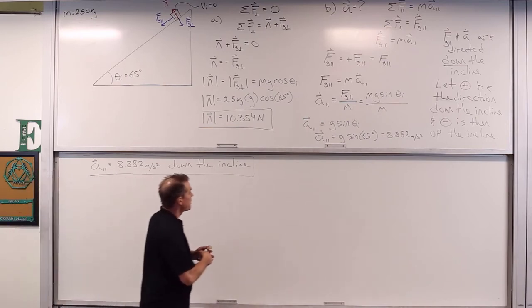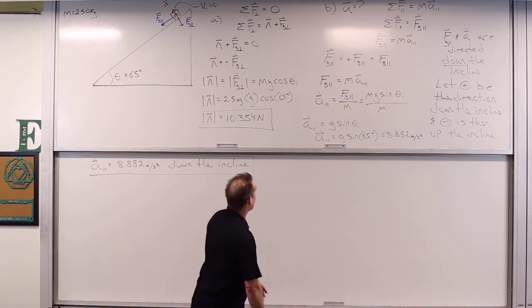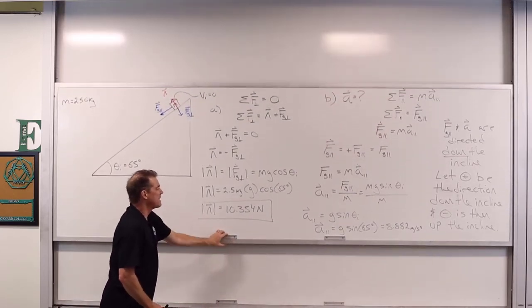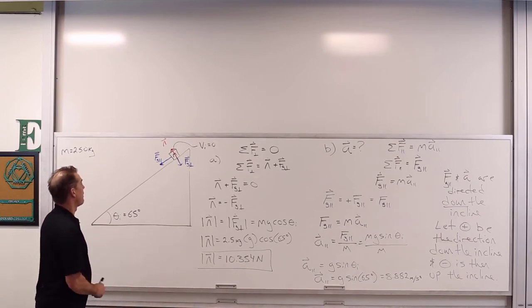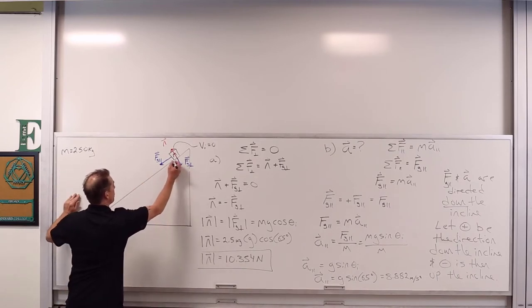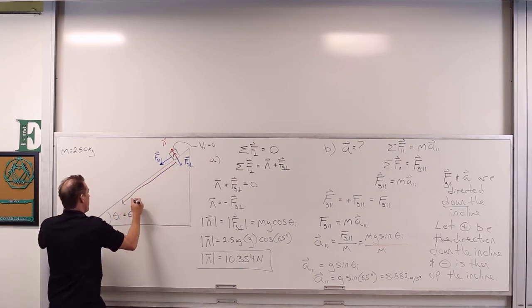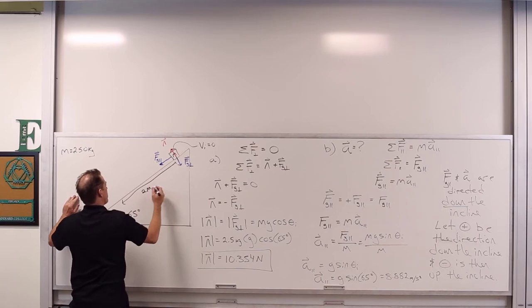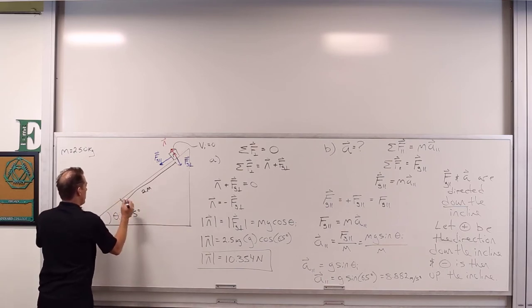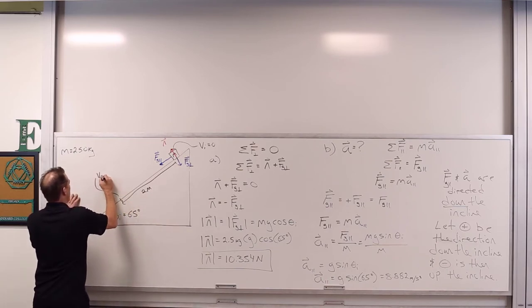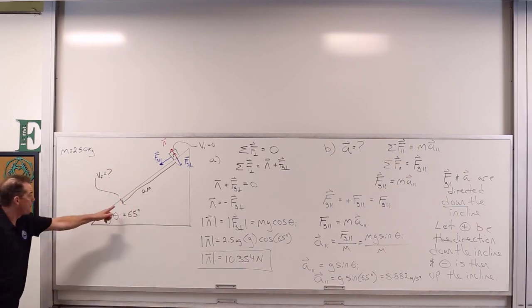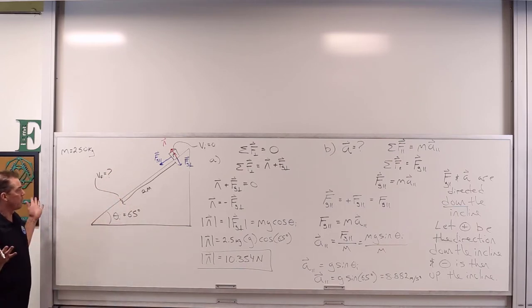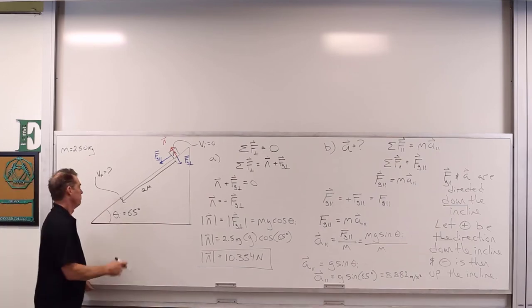Moving on, we're asked: what is the speed of the object after it has slid 2 meters down the incline from where it initially was? This object slides from its start position down 2 meters, and we want to know how fast it's going when it reaches that position. It's released from rest and slides down.